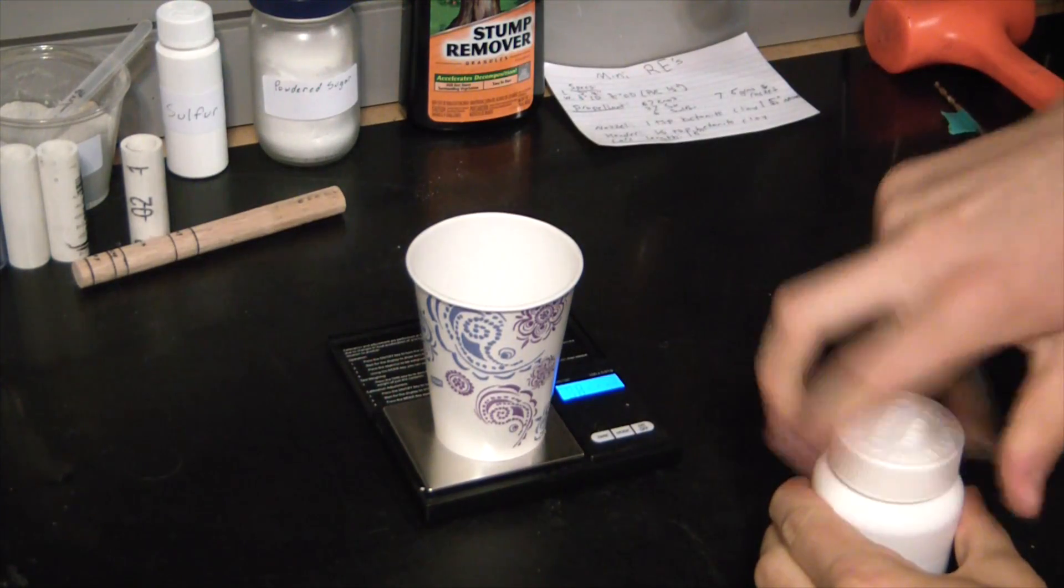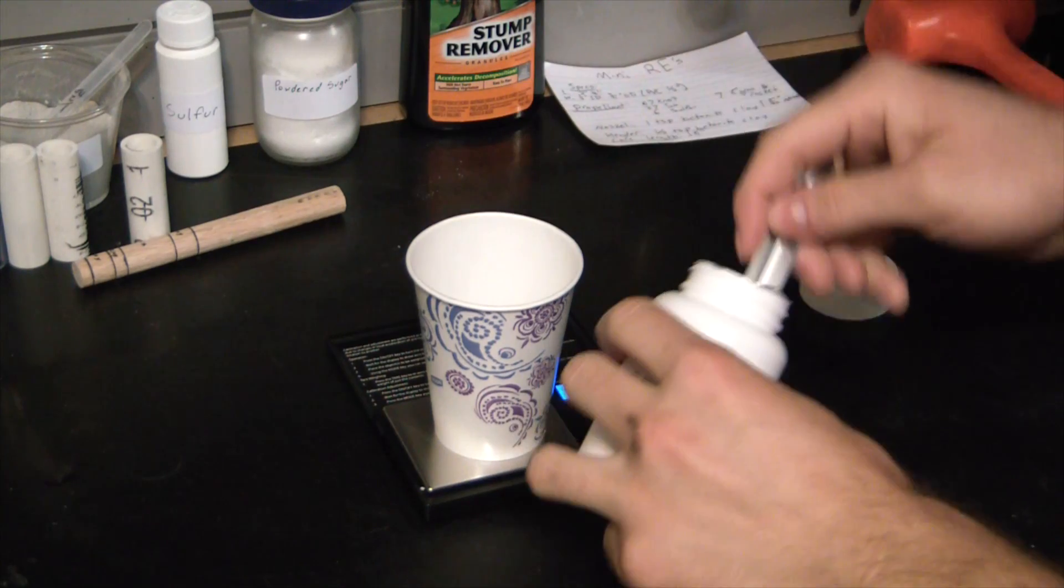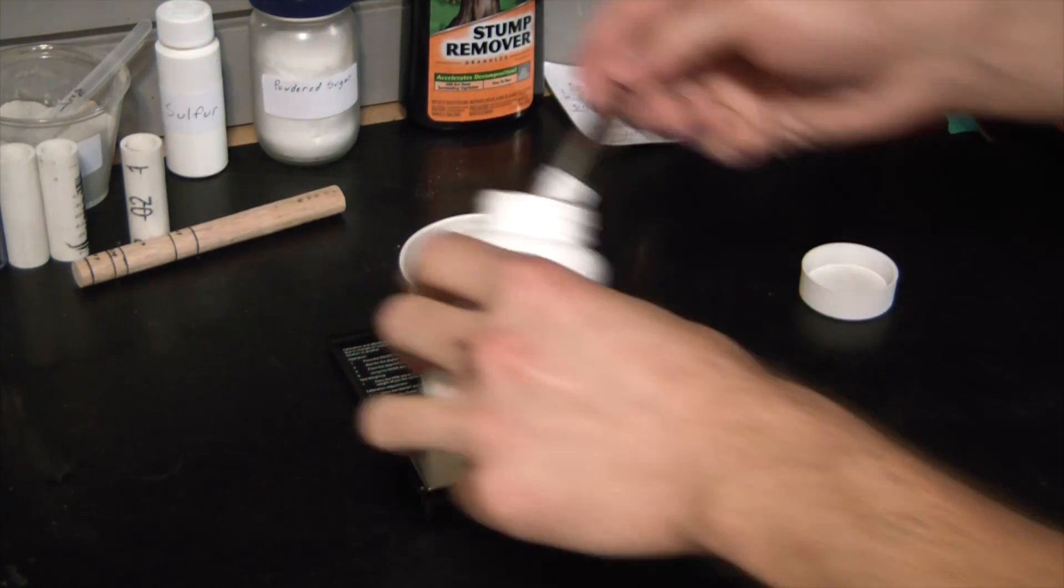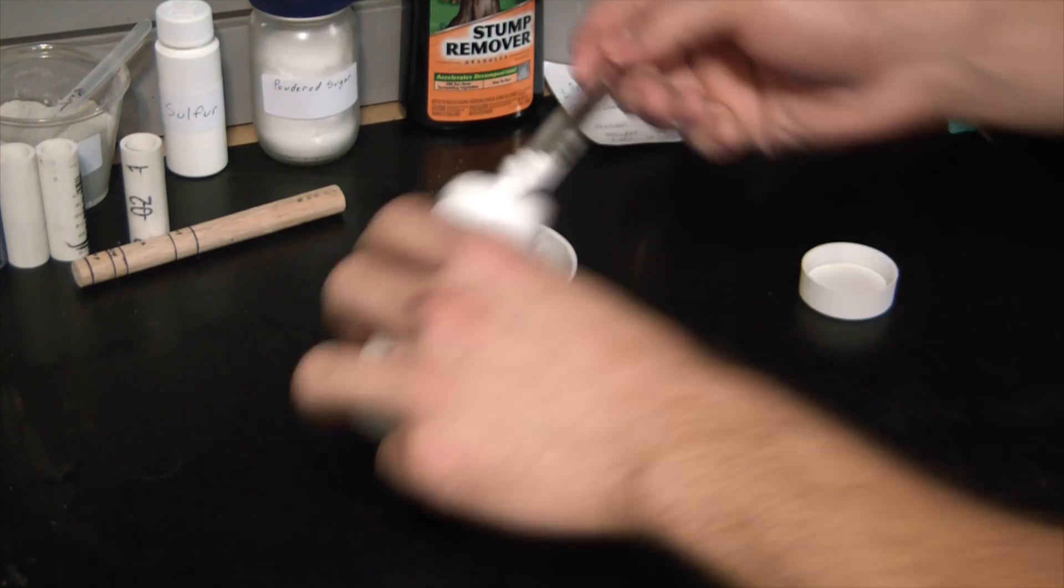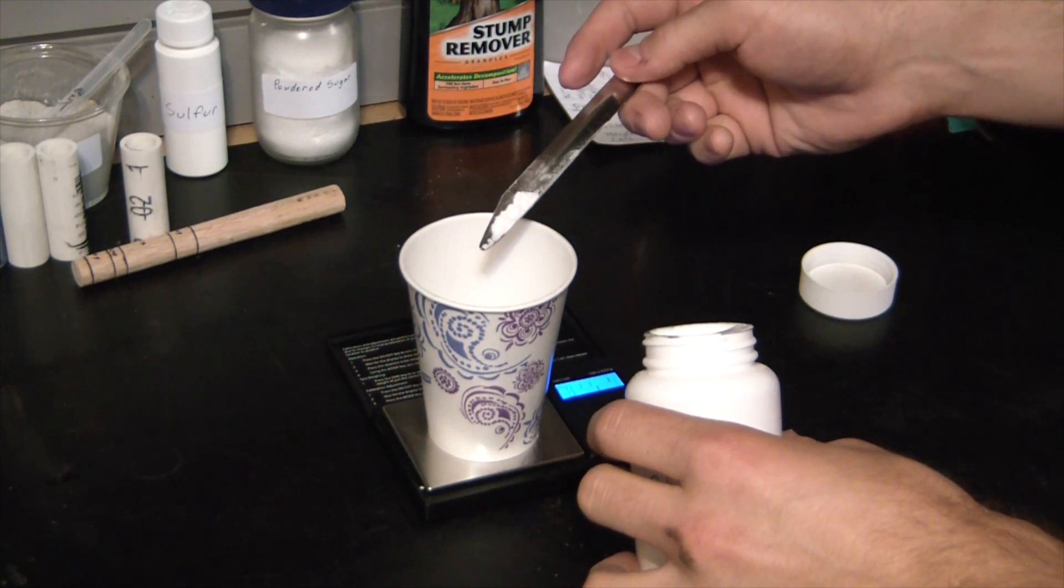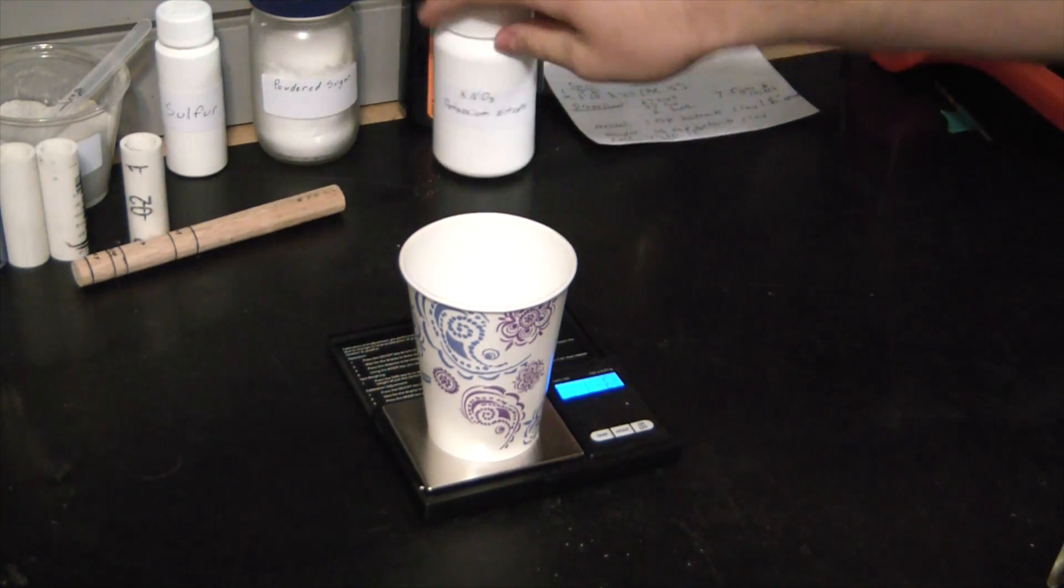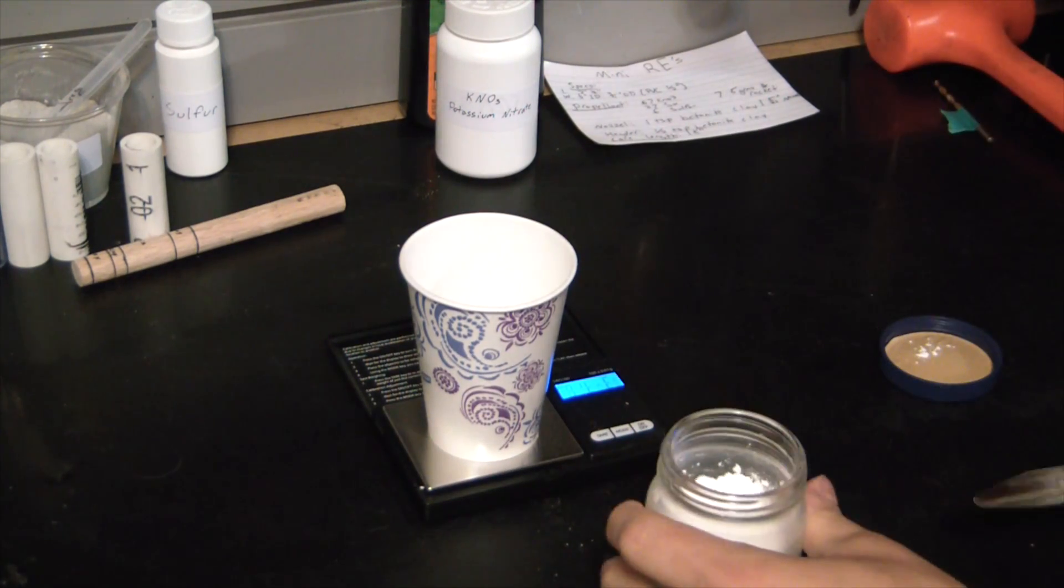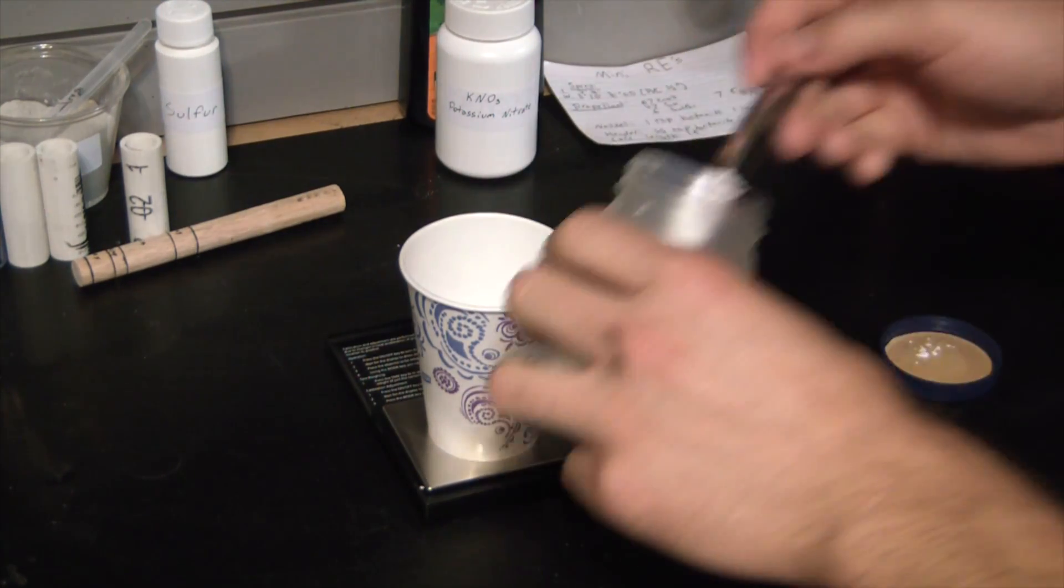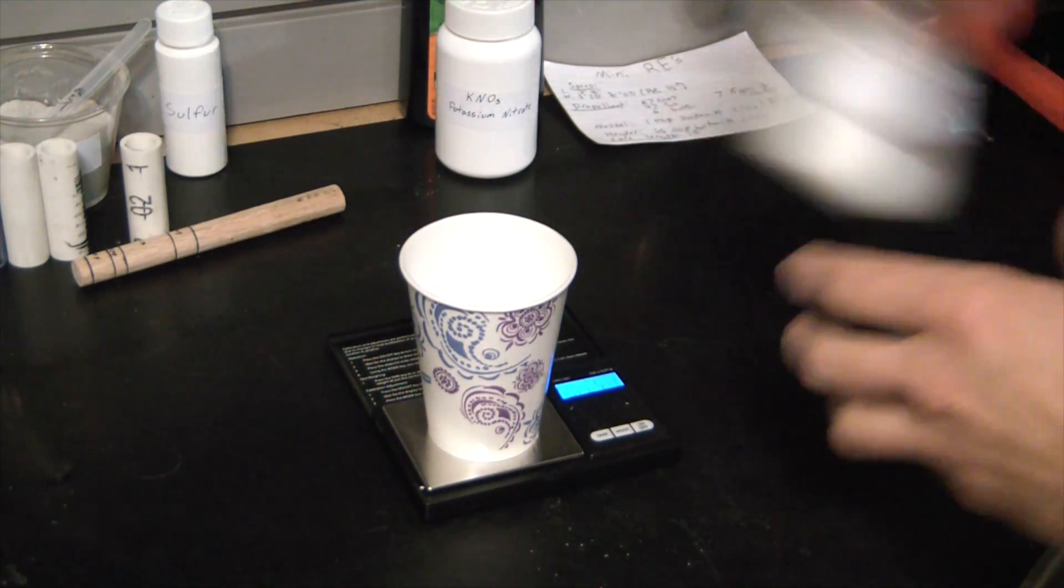You're going to want to measure out 67 grams of potassium nitrate. It's a good idea to keep this stuff in an airtight bottle because it does pick up moisture out of the air very effectively. It's very hygroscopic. There we are, almost 67 on the dot. 27 grams of sugar.